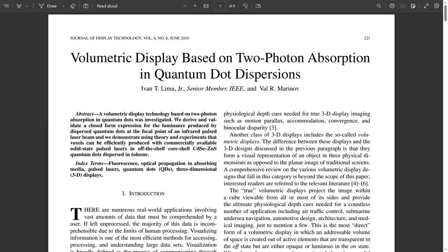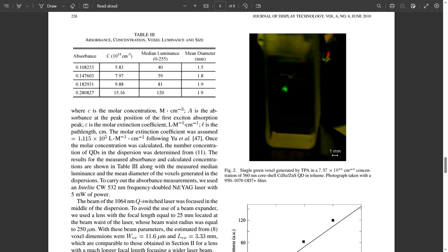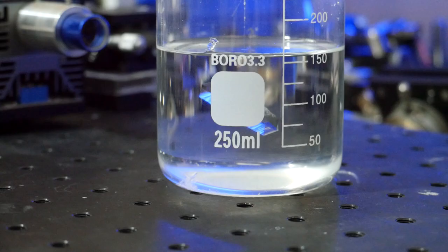This could be used in volumetric displays. There are actually a few academic papers on this subject, and the spot is termed a voxel or a volumetric pixel. Dyes do actually degrade over time, so perhaps it's time to investigate quantum dots.